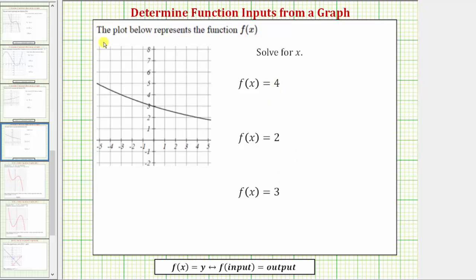When we have the graph of a function on the coordinate plane, we always find the function inputs along the horizontal axis. Because we're given the function f of x, we know the input variable is x, and we always find the function values or function outputs along the vertical axis.